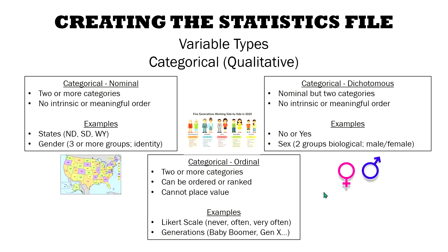Hopefully that better helps you understand variable types, including continuous variables, and categorical variables that are either nominal, ordinal, or dichotomous.